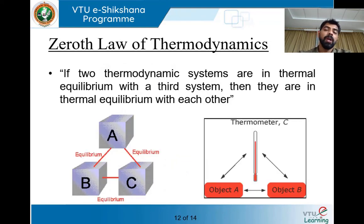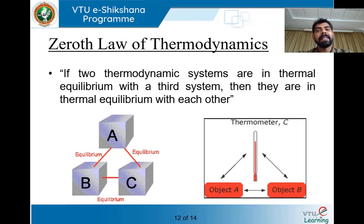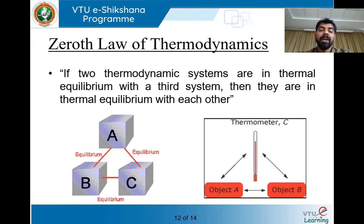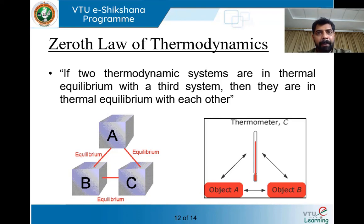The zeroth law of thermodynamics is simple to state: if two thermodynamic systems are in thermal equilibrium with a third system, then they are in thermal equilibrium with each other. If A is in equilibrium with B and A is in equilibrium with C, then B and C are in thermal equilibrium. If A measures T1, B measures T2, and C measures T3, then since T1 equals T2 and T1 equals T3, obviously T2 must equal T3.